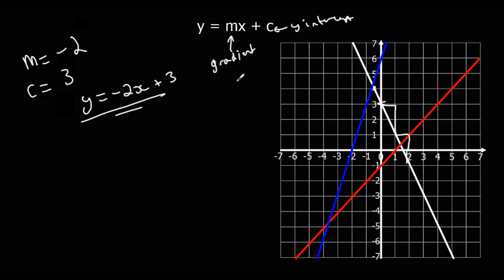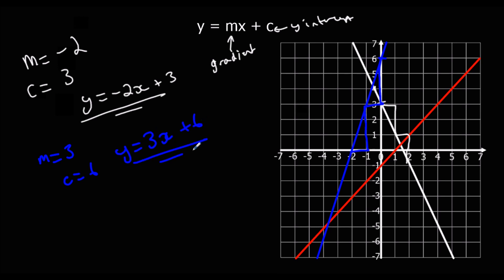The blue line next. Every one it goes across, it's going up three — one across, up three — so it's got a gradient of three. And it's crossing the y-axis at six, so c is six. Therefore y equals three x plus six.